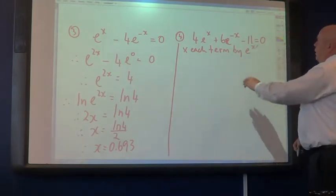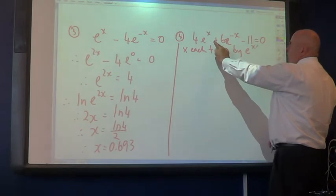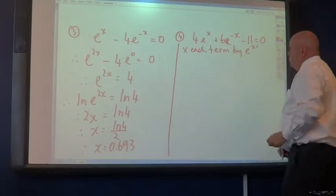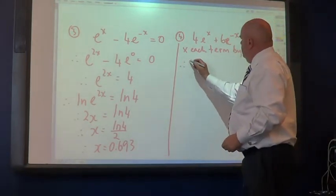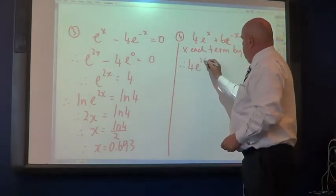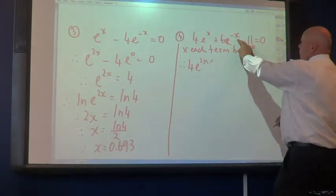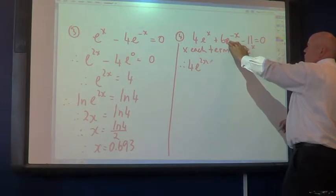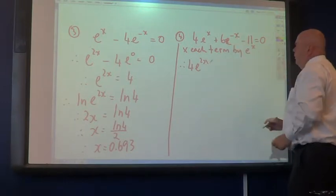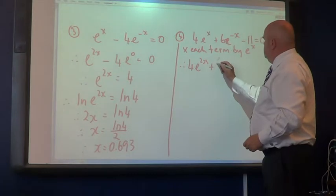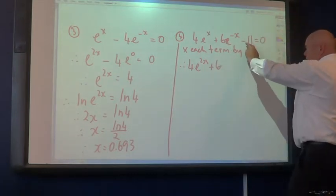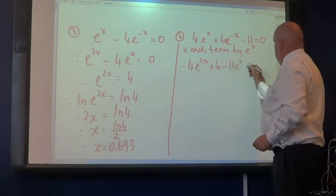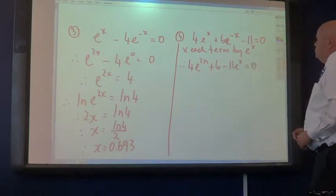So, I'll just make a note here. Times each term, so that you can see where everything's coming from, by E to the power of x. So, just put an E to the power of x there. What have you got? You've got 4E to the power of 2x. Same base. You're going to add your indices. Therefore, 4E to the 2x, what do we get here? Again, it's similar to what happened over there. E to the power of negative x times E to the power of x, which is just E to the power of 0, isn't it? So, that's plus 6. And, here, we get minus 11E to the x. And, all that's equaling 0.